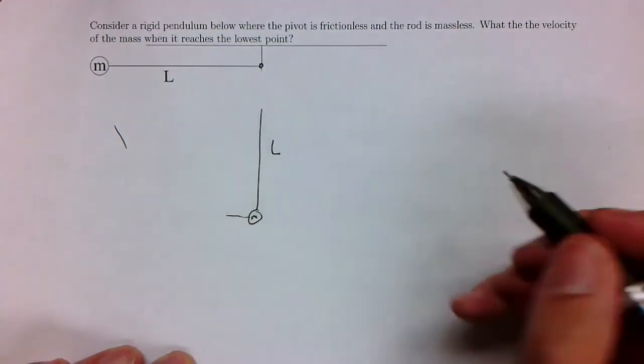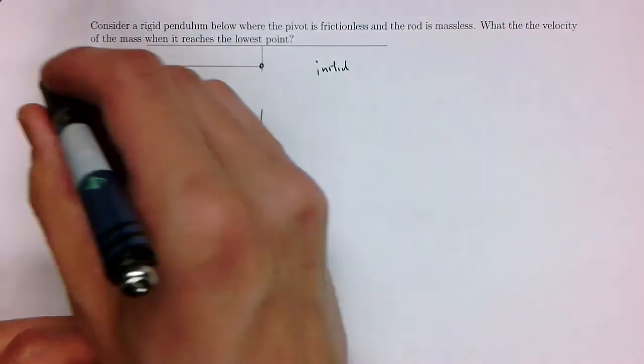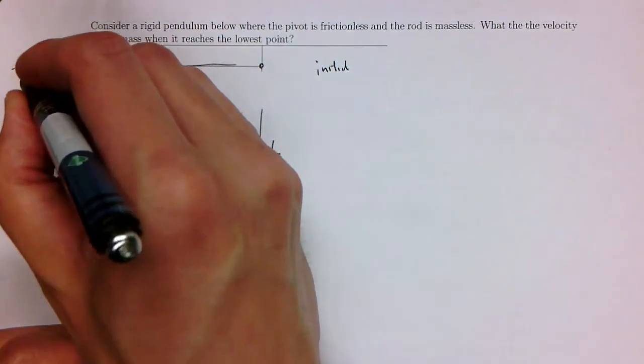So let's pick what the initial is. Let's pick basically what the y equals zero point is. Let's pick what this is y equals zero.